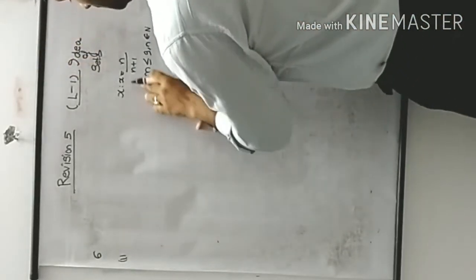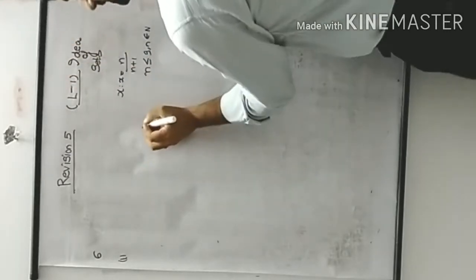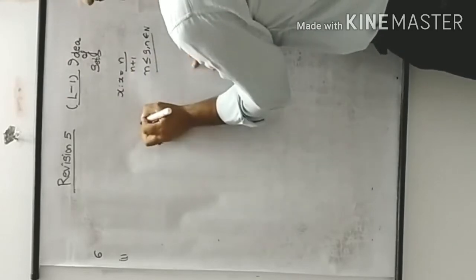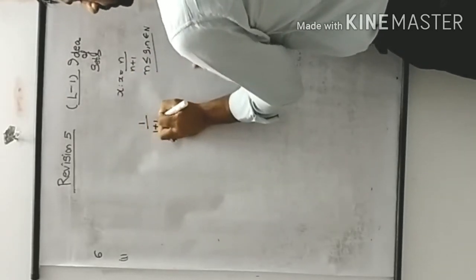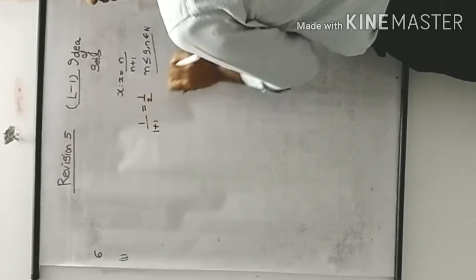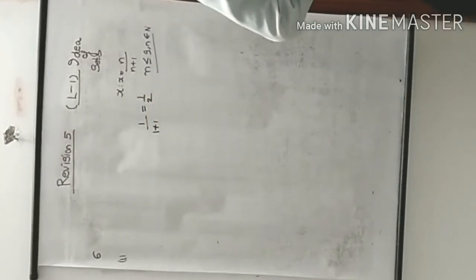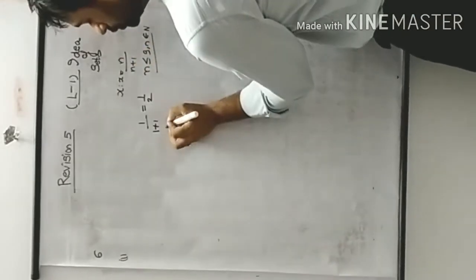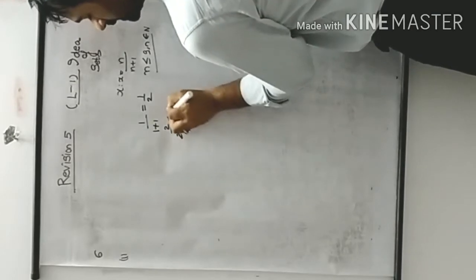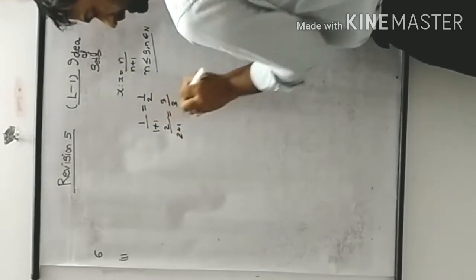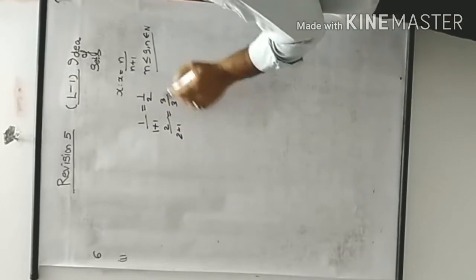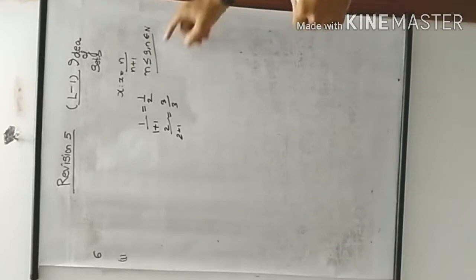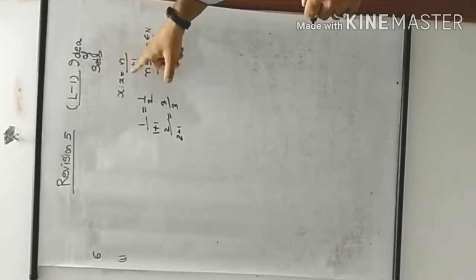Now, n/(n+1) means: the first natural number is 1, so 1/(1+1) = 1/2. The second natural number is 2, so 2/(2+1) = 2/3. Small n is the natural number, so we move from the first natural number and apply n/(n+1).